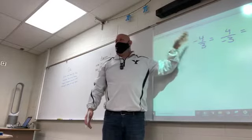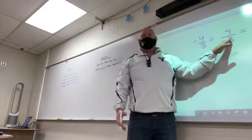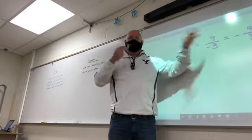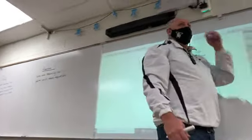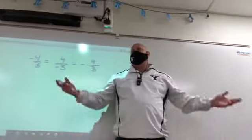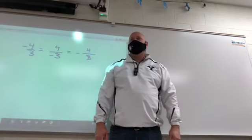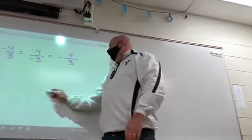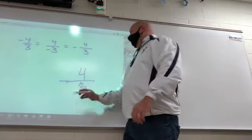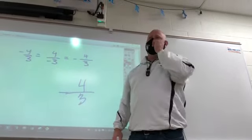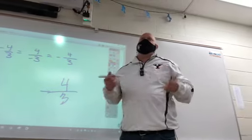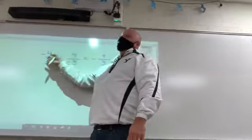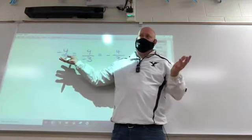We typically write the negative in the numerator. Negative 4 over 3 looks best aesthetically. Negative 4 thirds with the negative on the whole fraction — people write sloppy and the negative sign can look like it disappeared. It's not incorrect, but negative 4 thirds written with the negative in the numerator looks the best.